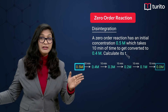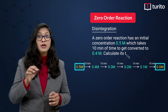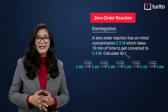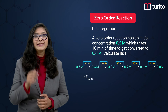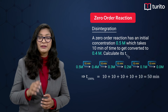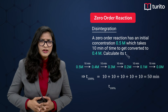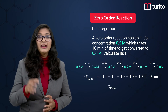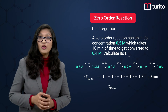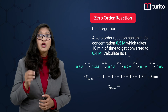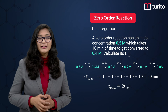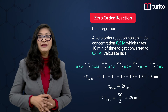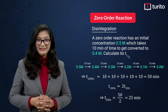So from 0.5 to 0 the concentration will be fully degraded in 50 minutes. Therefore t₁₀₀% equals 50 minutes. Since t₁₀₀% for a zero order reaction equals two t½ values, the t½ will be 50 divided by 2, which is 25 minutes. Easy!